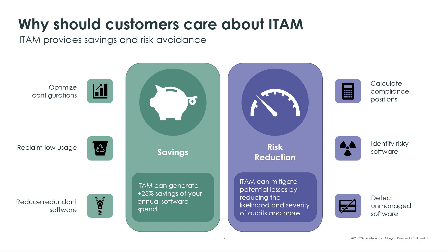The last area under risk reduction is identifying software purchased outside normal procurement means to ensure your processes are being used — this is where we detect unmanaged software. We'll dive into that outcome around identifying shadow IT, because with ServiceNow SAM spend detection, we can reduce costs by consolidating software products with similar functionalities.